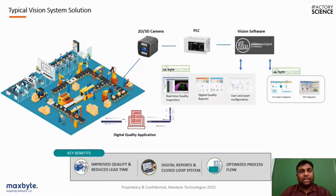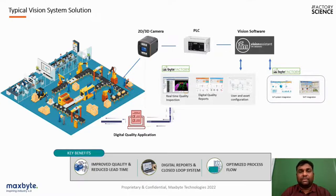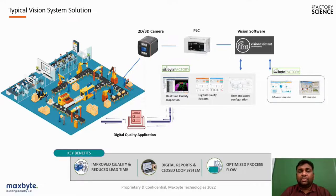A typical vision system solution in a factory shop floor can use either 2D or 3D cameras depending on the application. A PLC is connected so that all digital images captured are transferred to vision software. Multiple players in the market, like IFM or Cognex, provide the required vision software that analyzes images and provides results. Based on results, data can be interpreted for real-time quality inspection, digital quality reports, and user and asset configuration, and it can be integrated with IoT or SAP systems.